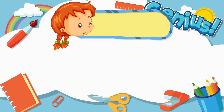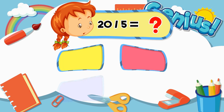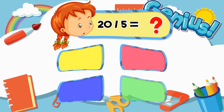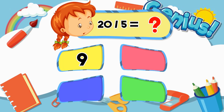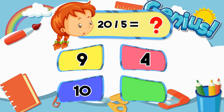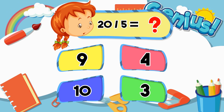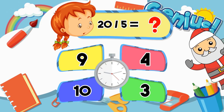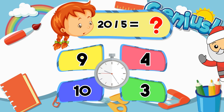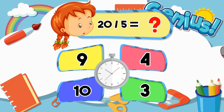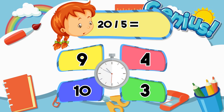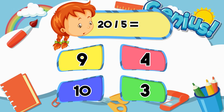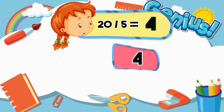What is 20 divided by 5? 9, 4, 10, 3, 4.